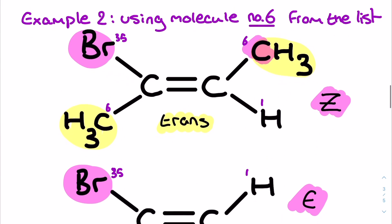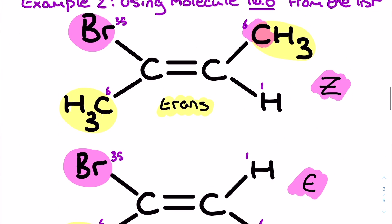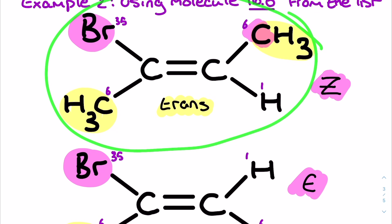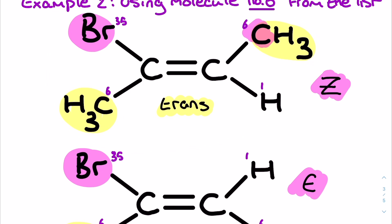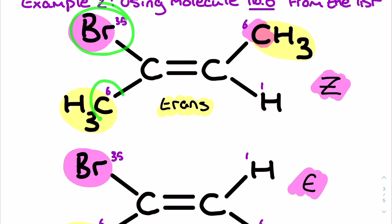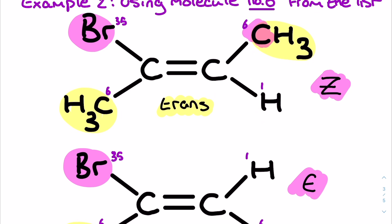Another example using molecule number six from the original list. Drawing out the molecule and looking at each carbon in the double bond: for the left-hand carbon I can see bromine and carbon, so bromine is higher priority due to its larger atomic number. On the right-hand side I've got carbon and hydrogen, so carbon is the high priority group on the right. Both high priority groups are on the same side — either both top or both bottom — making this the Z stereoisomer.